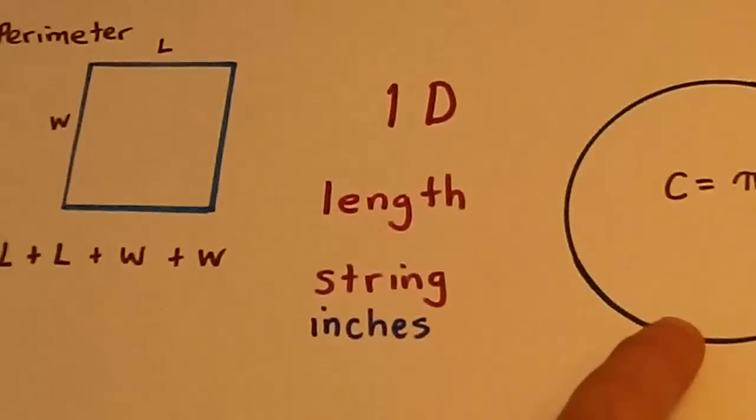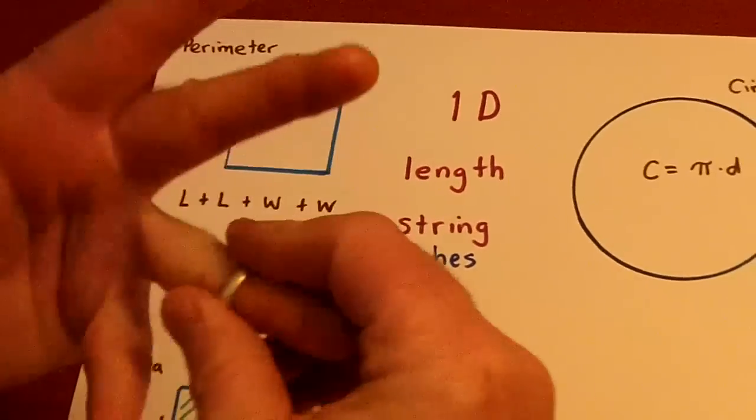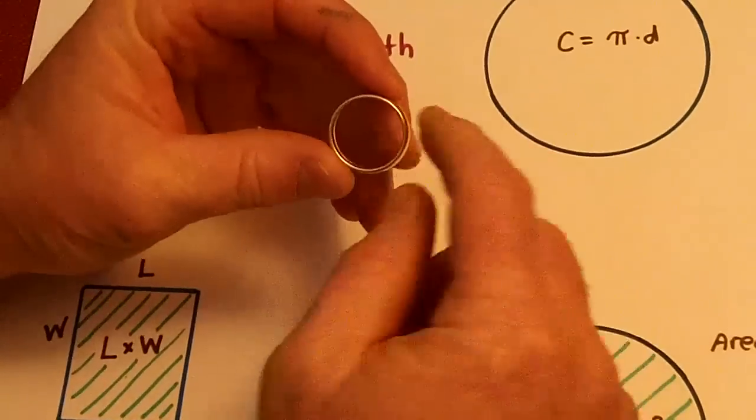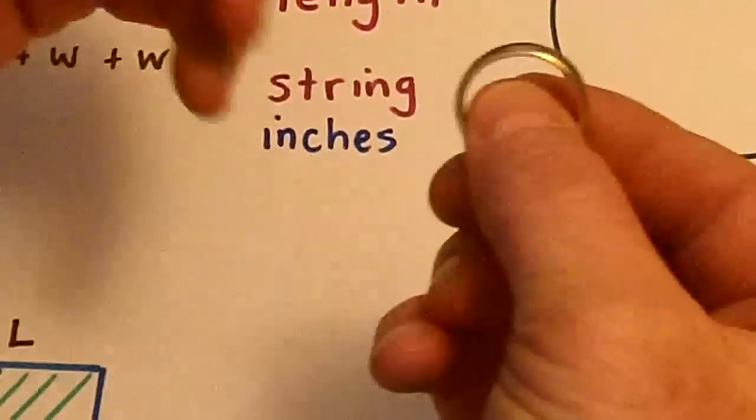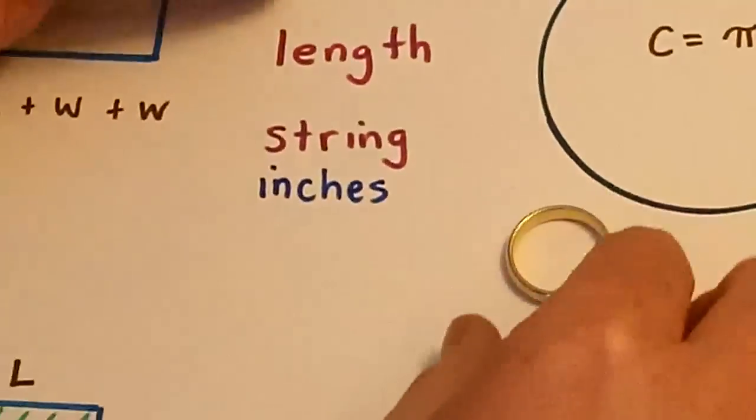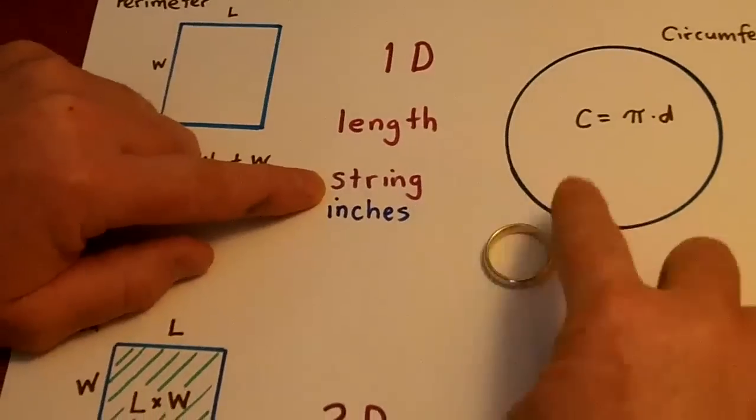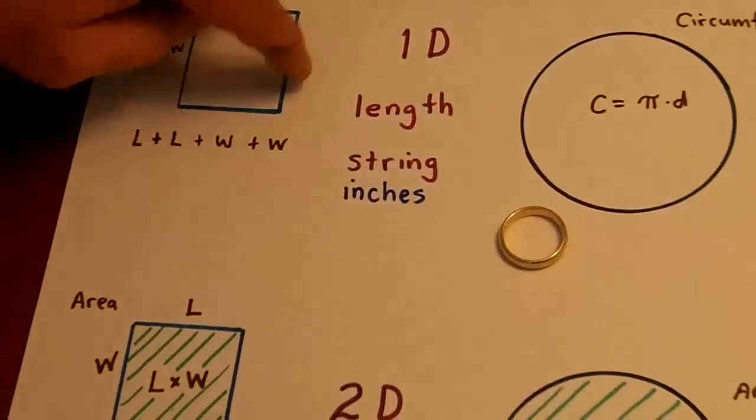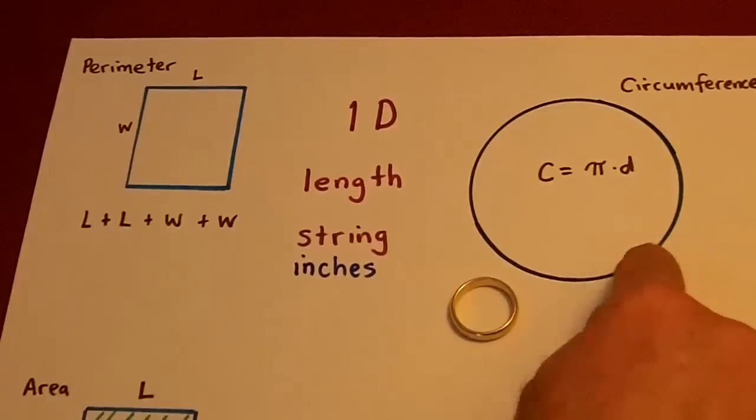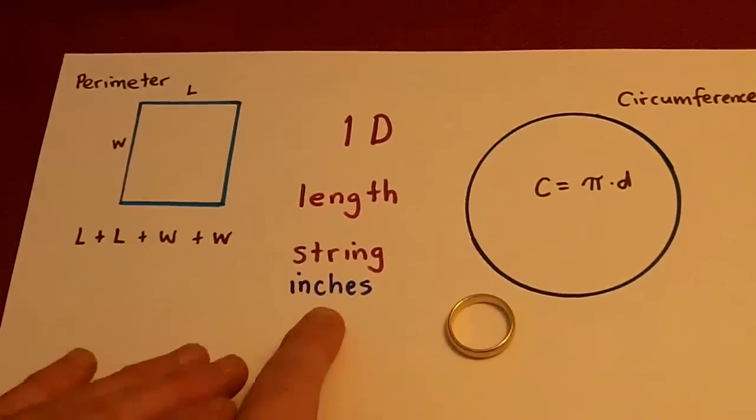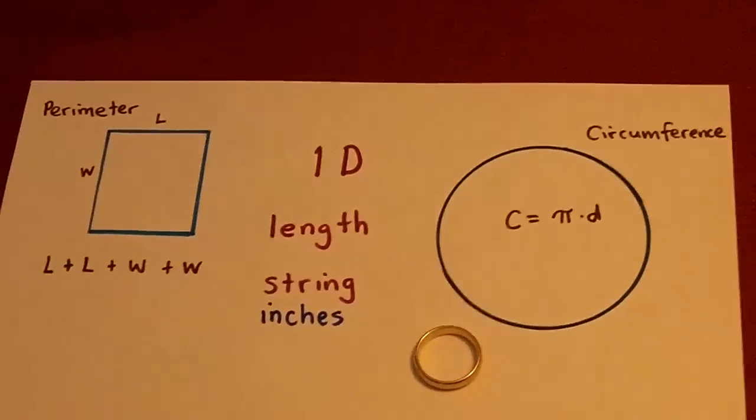One dimension is kind of just like a string or say this ring, if I can get it off my fat finger. If that gold just goes around just like that, if we unraveled this, we could just make a nice straight line. One-dimensional is just length. It's kind of like putting a string around here or just that line. And when we measure just lines, just the length, we only measure it in inches or feet or centimeters.